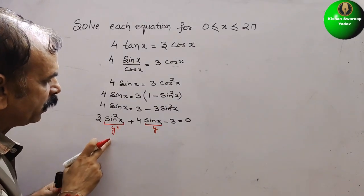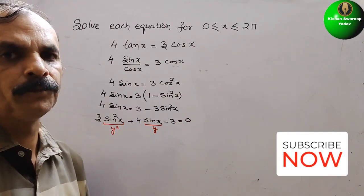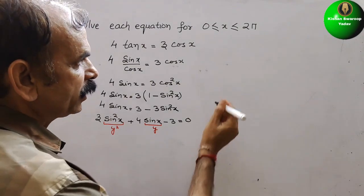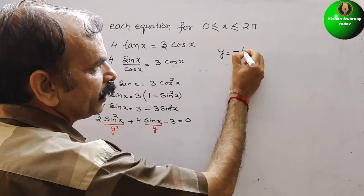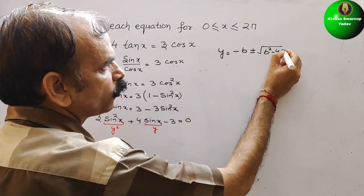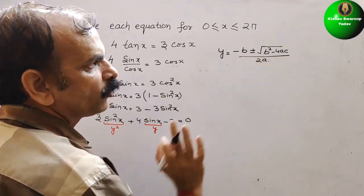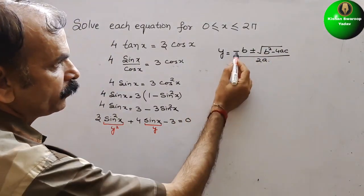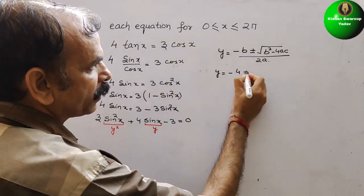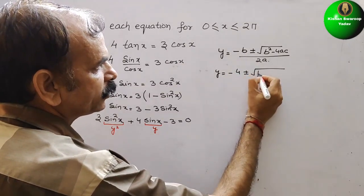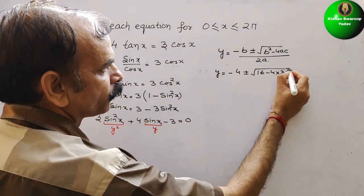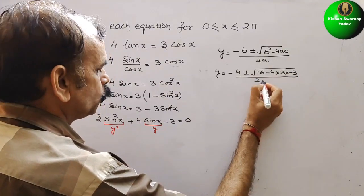So now it will become 3y² + 4y − 3 = 0. We will find out the value of y using the quadratic formula: y = (−b ± √(b² − 4ac)) / 2a. So here, y = (−4 ± √(16 − 4·3·(−3))) / (2·3).